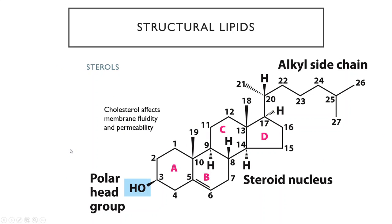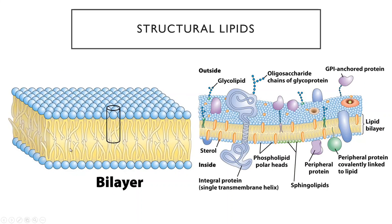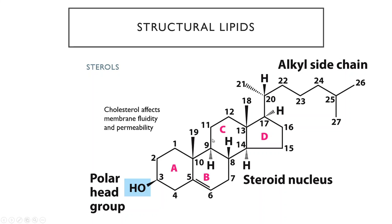Another type of lipid that isn't itself a structural component of the membrane but does affect its structure are sterols. Most lipids have long, unbranched chains, but sterols have a polar alcohol head group and a long carbon chain forming several ring structures — called the steroid nucleus. Cholesterol is an example of a sterol, found in the membranes of some cells, and is important for affecting the fluidity and permeability of the membrane. The concentration of cholesterol affects how freely molecules can move around within the bilayer.